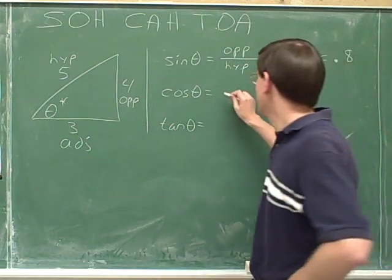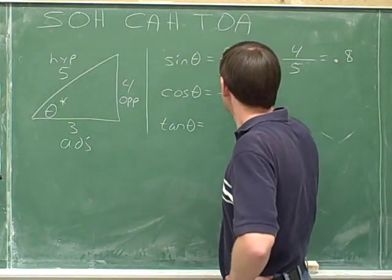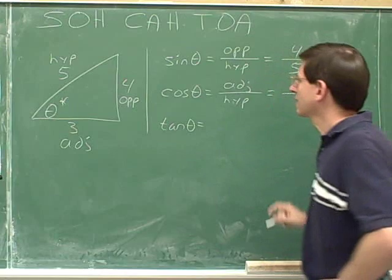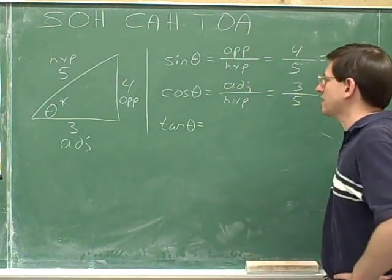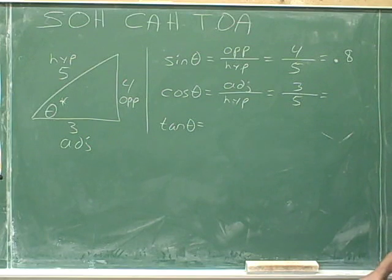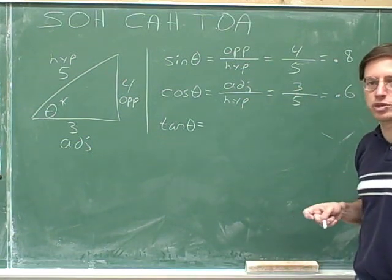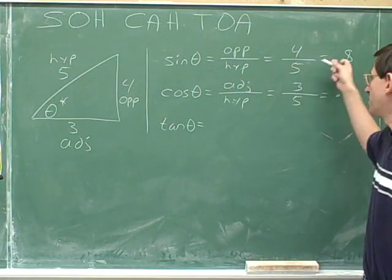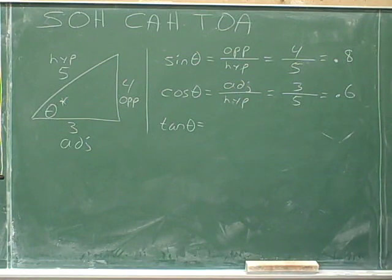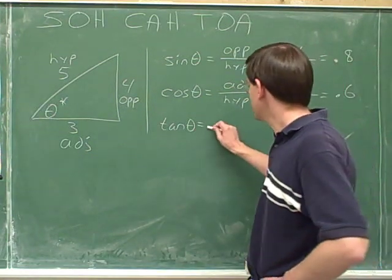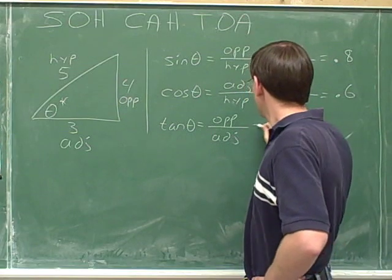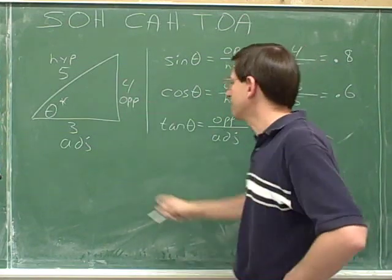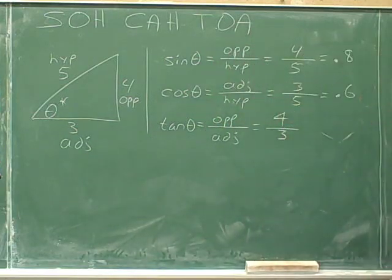Now let's do the cosine of theta — adjacent over hypotenuse. The adjacent side is 3 and the hypotenuse is 5, so the cosine of theta is 3/5, or 0.6. 3 divided by 5 is 0.6, and 4 divided by 5 is 0.8. Now the tangent — TOA, tangent is opposite over adjacent. The opposite side is 4 and the adjacent side is 3, so the tangent of theta is 4/3.